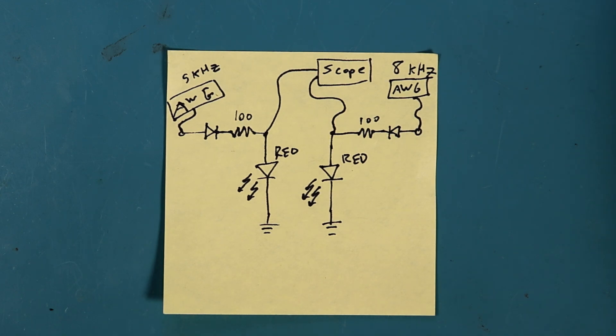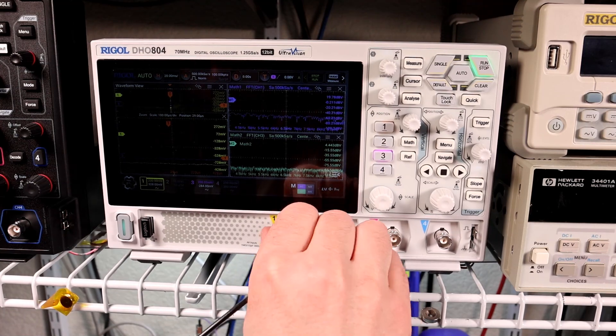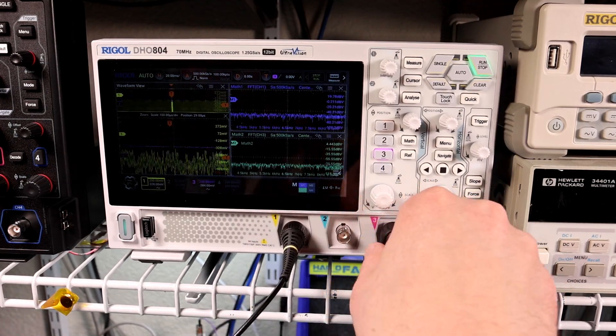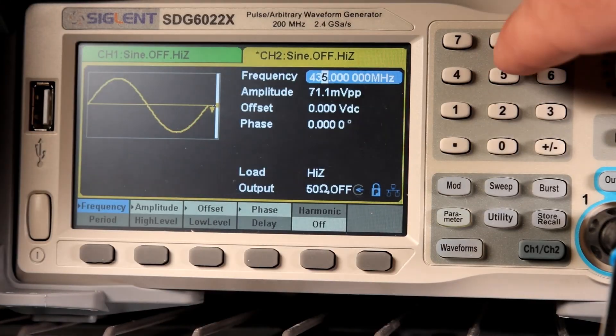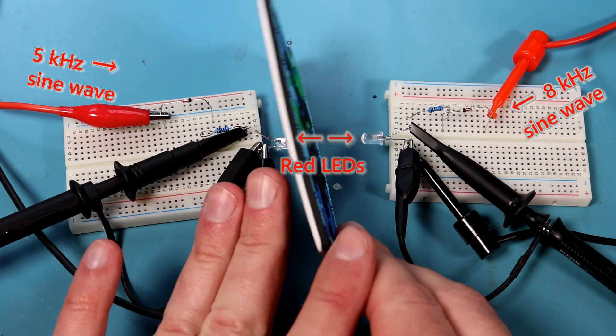We'll monitor the voltages across both LEDs using two channels on an oscilloscope. The only difference between the two sides is that we'll be driving the left side with a 5kHz sine wave from the ArbGen, whereas we'll be using an 8kHz sine wave on the right. Okay, so here are the circuits. We have an old DEF CON badge blocking the light between the two boards.